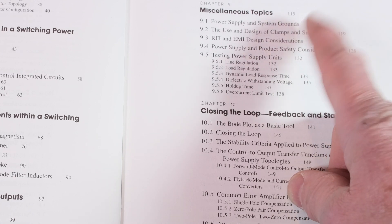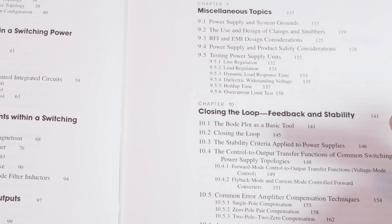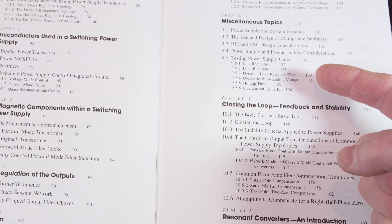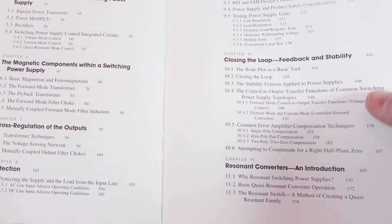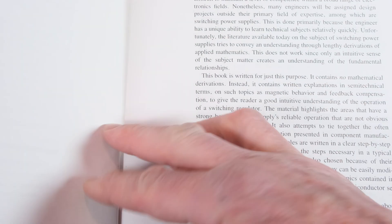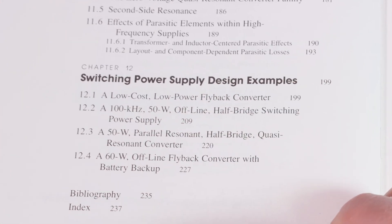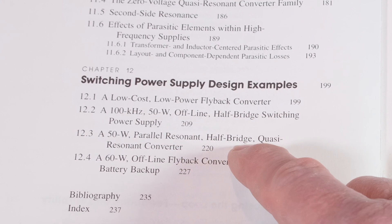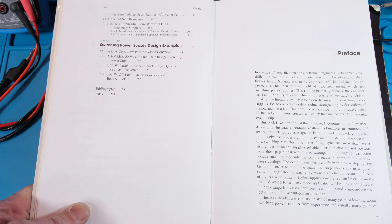He covers switching power supply topologies, semiconductors, power MOSFETs, transistors, voltage mode and current mode control ICs, and magnetic components—forward, flyback, and mutually coupled. He also covers cross regulation, protection schemes, miscellaneous topics like power supply system grounds and grounding, which is very important. Design clamps and snubbers, EMI stuff, product safety considerations, testing, load, line regulation, dynamics, hold up time, and feedback stability. He does a really great job at that. Then he talks about resonant converters and ends with switching power supply design examples.